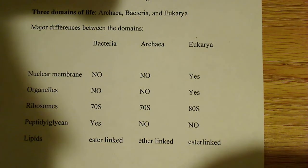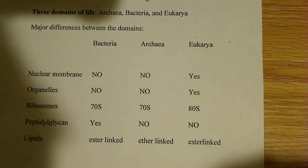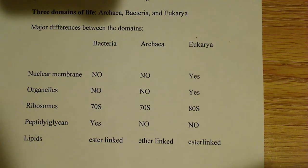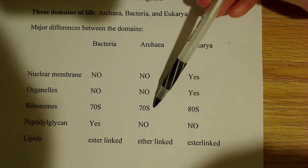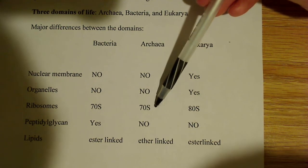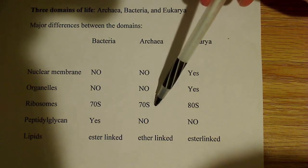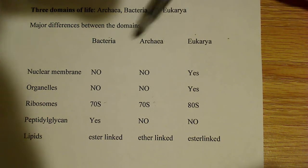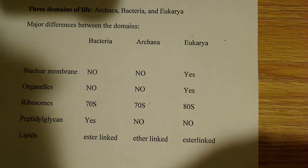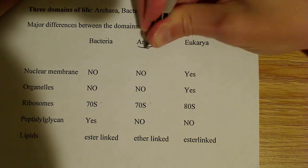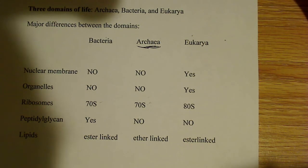Regarding ribosomes: bacteria have a 70S ribosome, archaea also have a 70S ribosome, and eukaryotes have the 80S ribosome. An interesting fact is that although archaea have a 70S ribosome, antibiotics don't work on their 70S ribosome. Antibiotics that target the 70S ribosome of bacteria would be ineffective against archaea's 70S ribosome. That said, there are no known pathogens among archaea — they are not pathogenic, meaning not disease-causing.